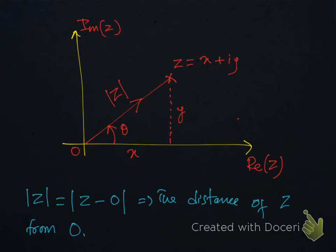In an argand diagram, modulus z can be represented as this distance. The distance of z from origin is known as the modulus z.